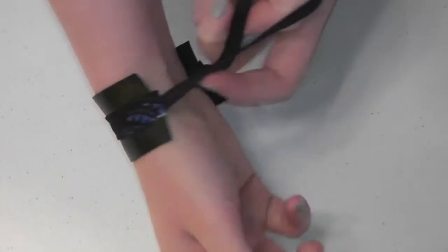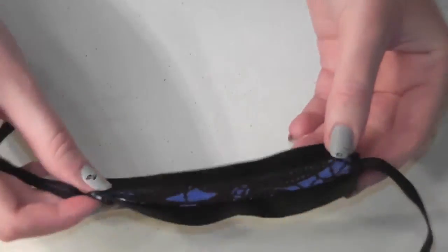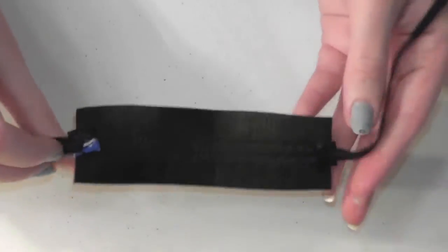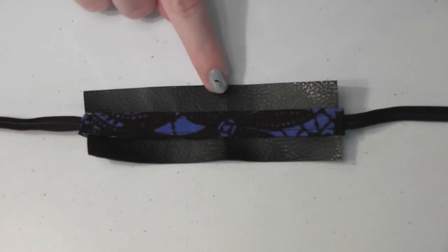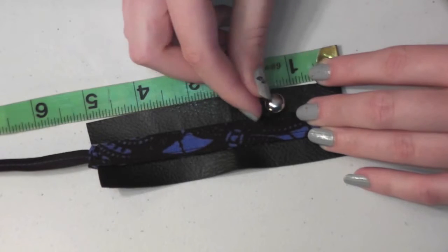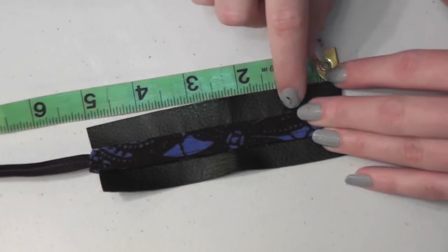You could technically wear it now, but I wanted to jazz my bracelet up a bit with some silver studs. Plus as you can see in this film, the pleather got a couple of wrinkled areas in it, so studs are the perfect disguise. I bought a package of studs that you don't need any tools to use and then played around with their arrangement.